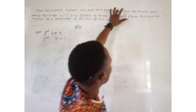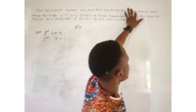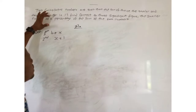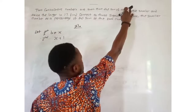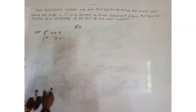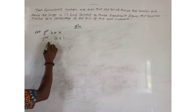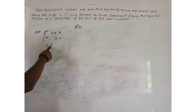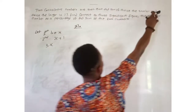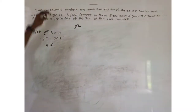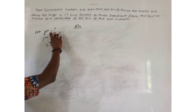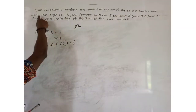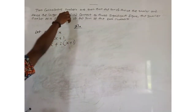The question says the sum of twice the smaller number and twice the larger number equals 17. The smaller number is S, so twice the smaller number is 3S. And the larger number is S plus 1, so twice the larger number is 2 times the bracket S plus 1. And the sum of these is equal to 17.